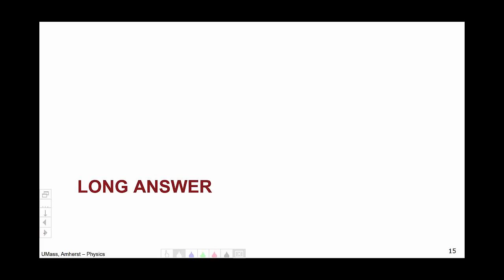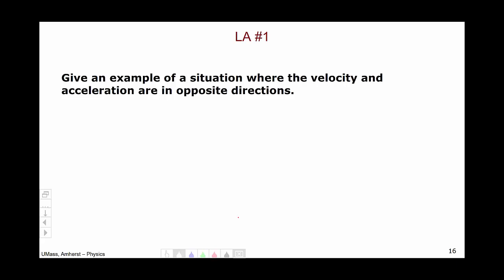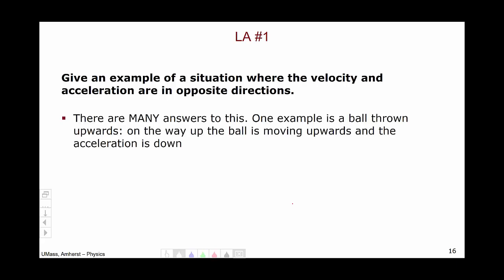Now let's move on to the long answer portion of the exam. The first long answer question asked you to give an example of a situation where the velocity and acceleration are in opposite directions. There were many acceptable answers. One example is a ball thrown upwards: on the way up, the ball is moving upwards while the acceleration due to gravity is downwards. Any correct answer receives full credit.